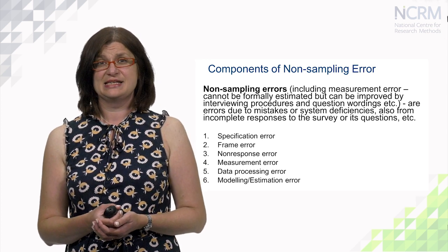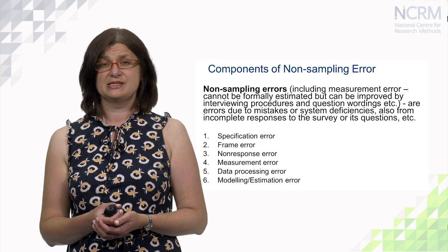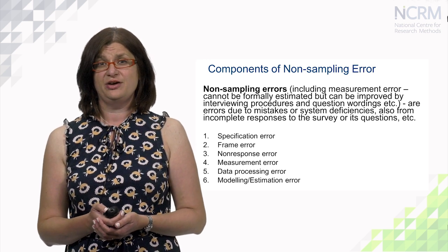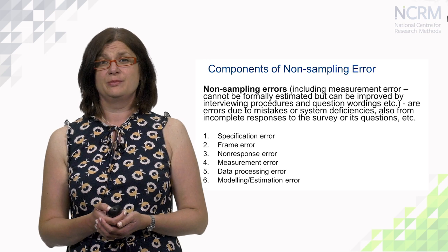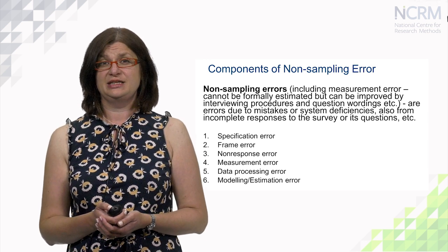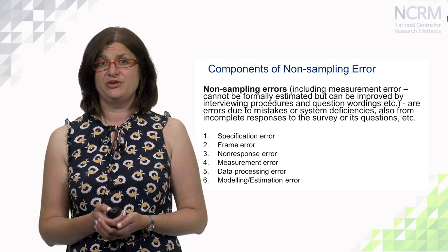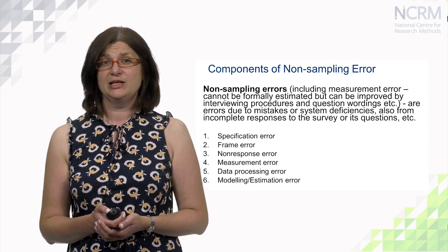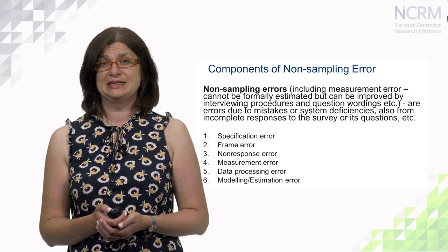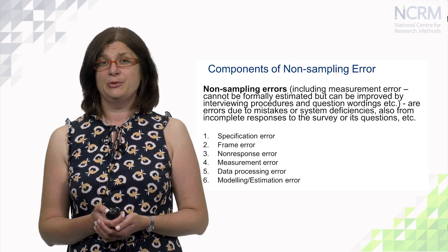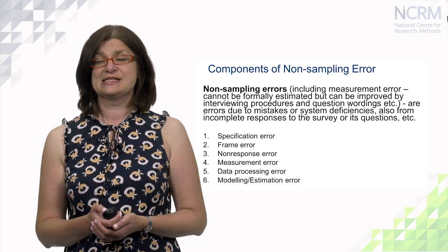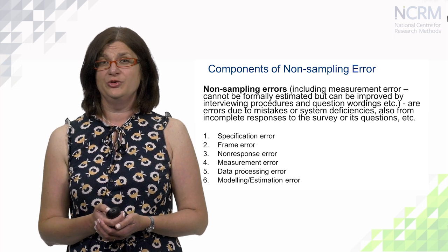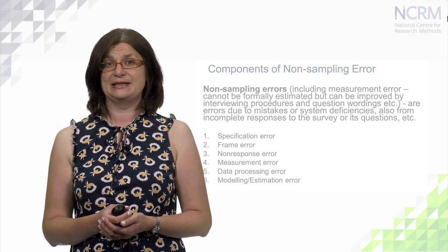Paul Biemer provided a list of components of non-sampling errors. This list contains six main components: specification error, frame error, non-response error, measurement error, data processing error, and modeling or estimation error. In this video, I'm not going to discuss the details of each error; however, you can watch the dedicated video on total survey error where all these errors are discussed in detail.